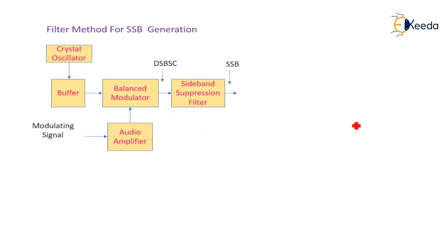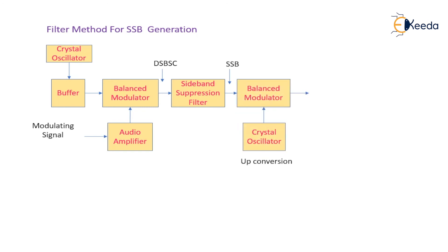Since only one sideband is required, a sideband suppression filter is used. This filter consists of two filters: one for the upper sideband and another for the lower sideband. The desired sideband is selected and the undesired sideband is heavily suppressed. Finally, at the output we get the SSB signal, but this signal has a very lower range of frequency.